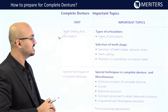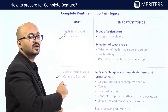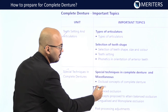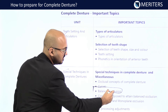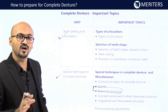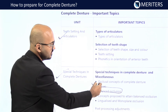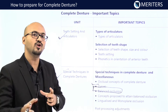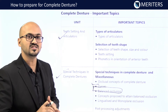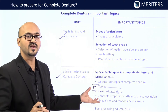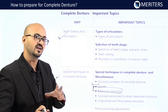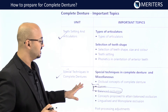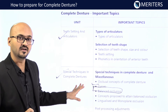For special techniques in complete dentures, focus on occlusion concepts — mainly balanced occlusion, all five factors of HANAU, and compensating curves. Understanding this topic clearly helps tackle many related questions. This is covered well in Boucher, Nallaswamy, and Winkler, so read from standard textbooks.